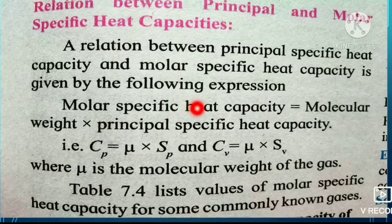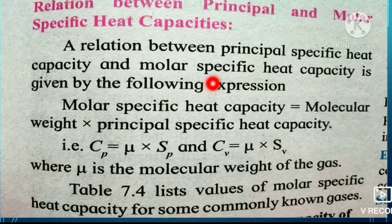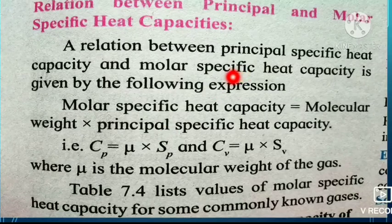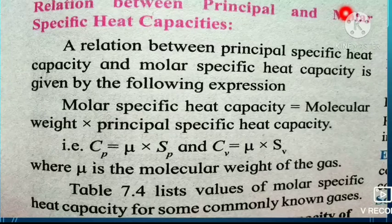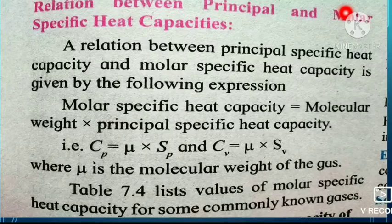The relation is: molar specific heat capacity equals molecular weight multiplied by principal specific heat capacity. Therefore, Cp equals mu times Sp, and Cv equals mu times Sv, where mu is the molecular weight of a gas — that is, the mass of one mole of a gas. Thus the specific heat capacities at constant volume and at constant pressure have different values.